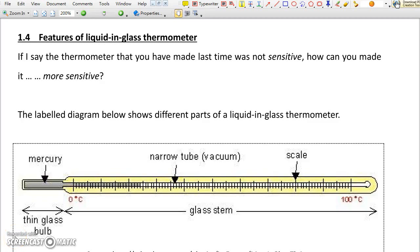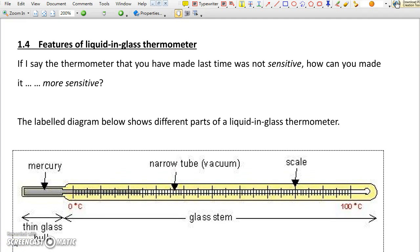1.4 Features of liquid-in-glass thermometer. A thermometer has different parts. One part is called bulb. Inside there is mercury. There is also a narrow tube, which is actually a vacuum inside with no air. This is the scale as you may know.